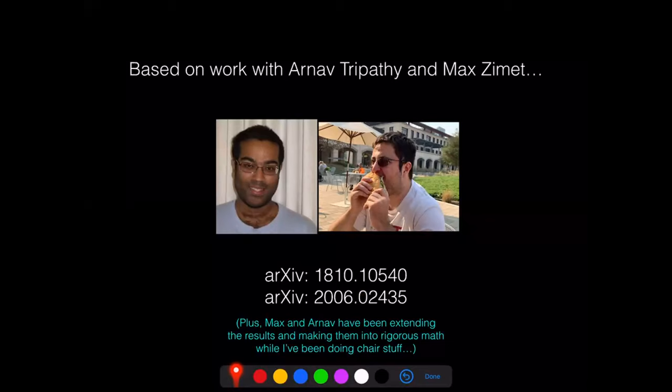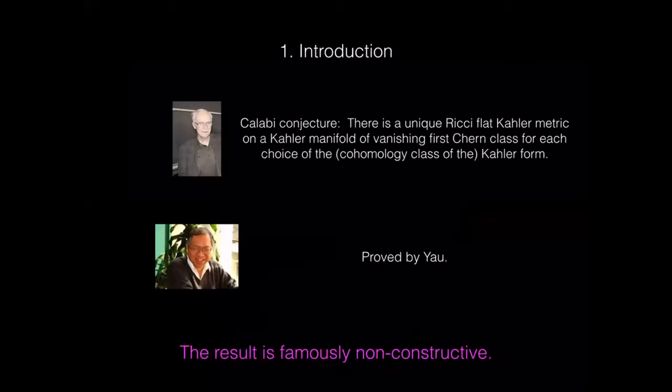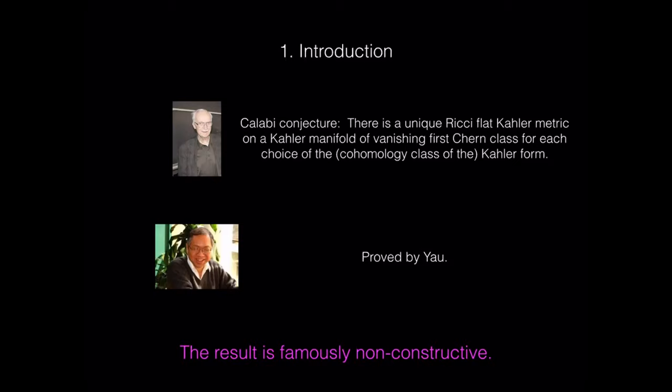So what are we talking about? There is a well-known conjecture due to Calabi that there is a unique Ricci-flat Kähler metric on a Kähler manifold under a relatively mild topological restriction — vanishing first Chern class — for each choice of the cohomology class of the Kähler form. This conjecture was made in the 50s and it was proved by Yau, actually when he was at Stanford, in the late 70s.